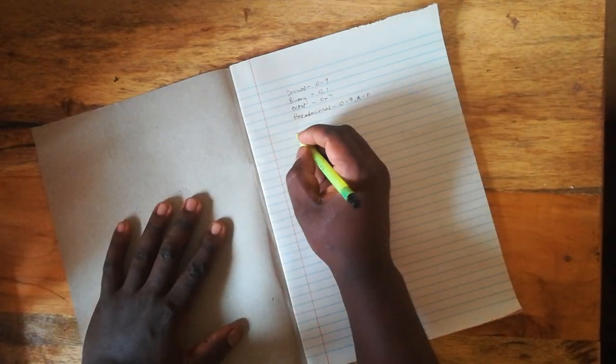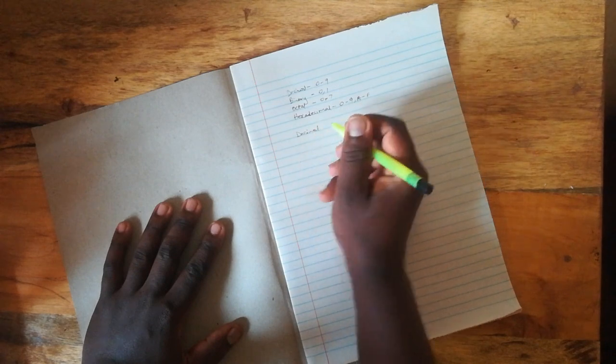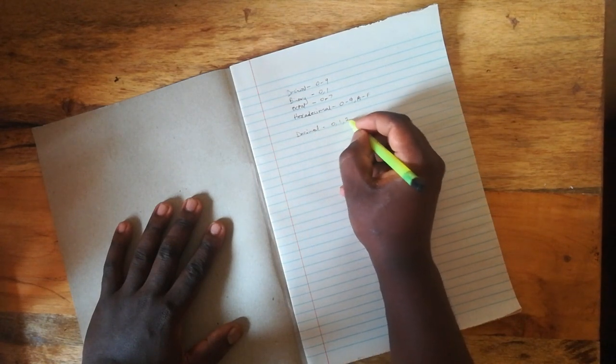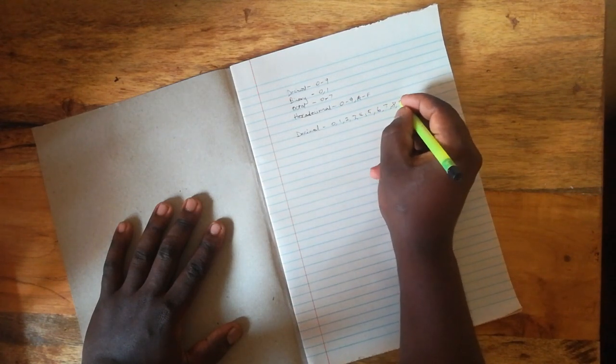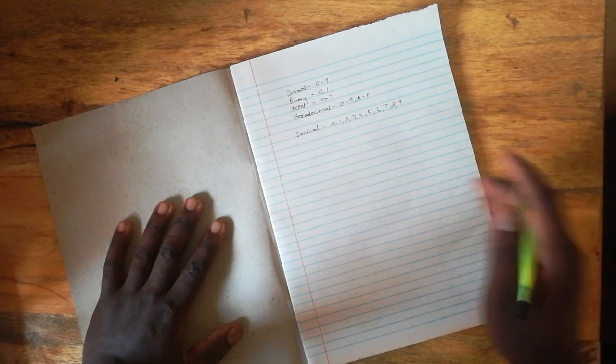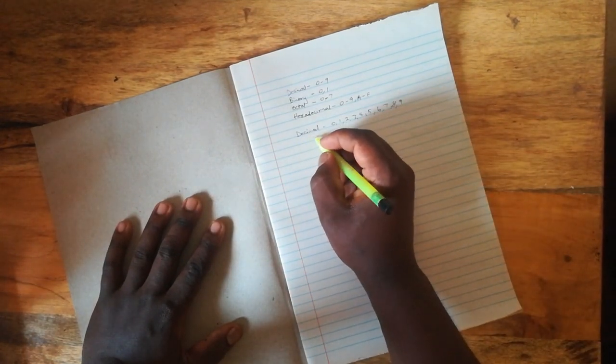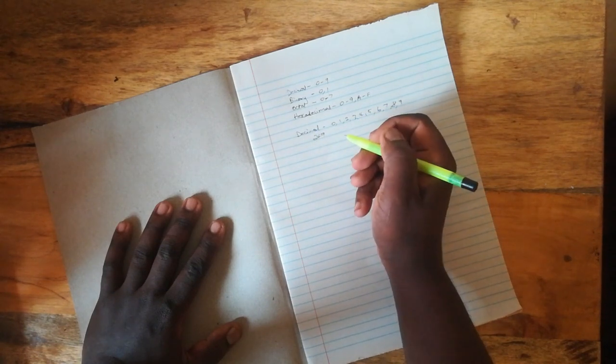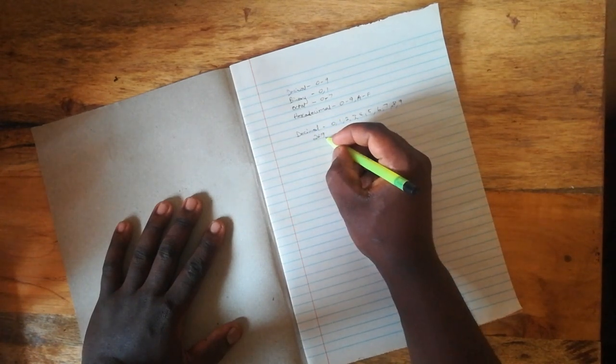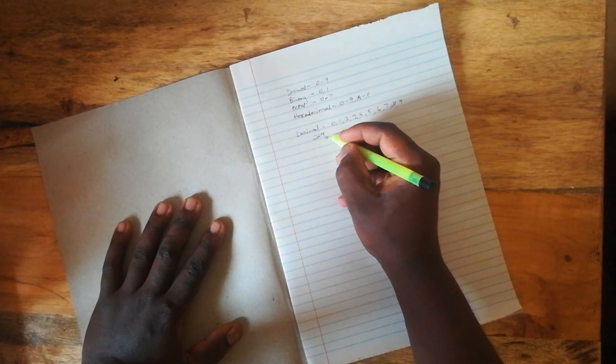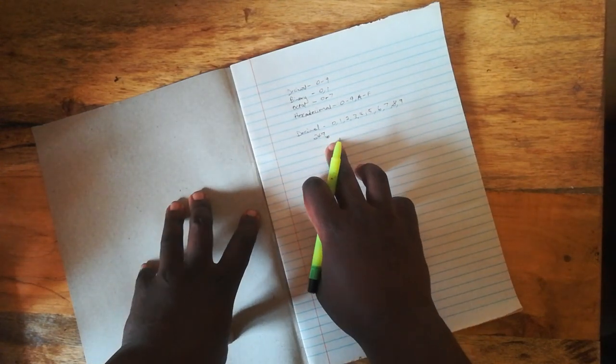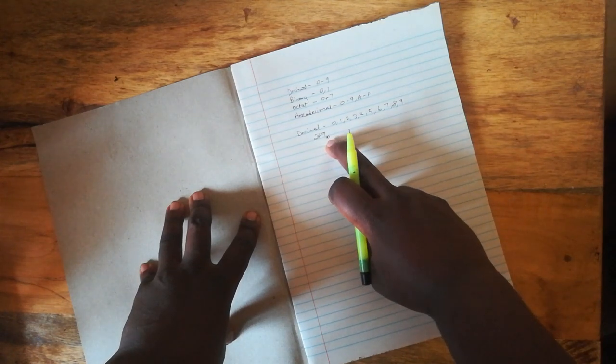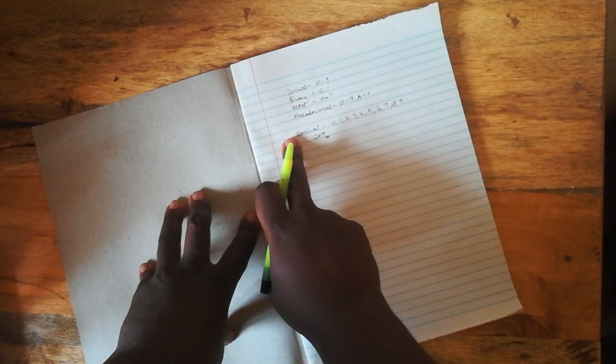Let's look at the decimal number system. We have zero, one, two, three, four, five, six, seven, eight, and nine. Numbers written in the decimal number system, for example 249, we will denote by having 10 as a subscript after the number. So 249 with a 10 as subscript means it is a number in the decimal number system.